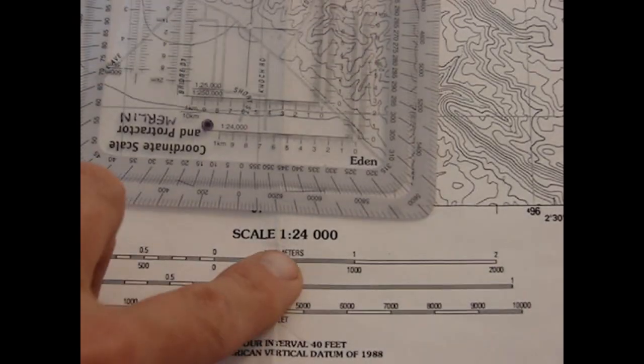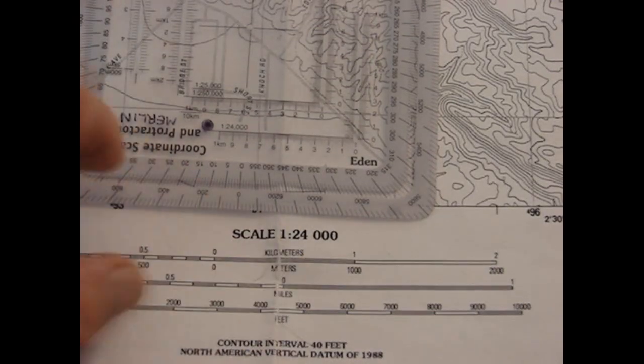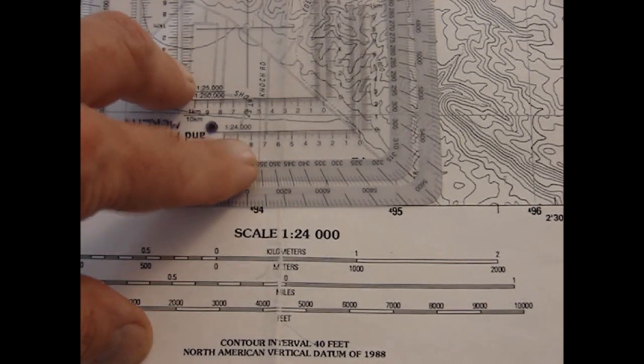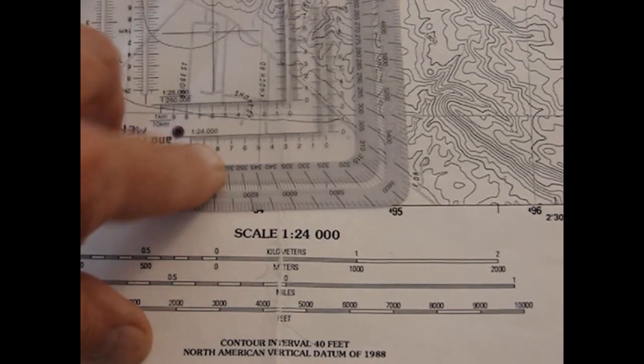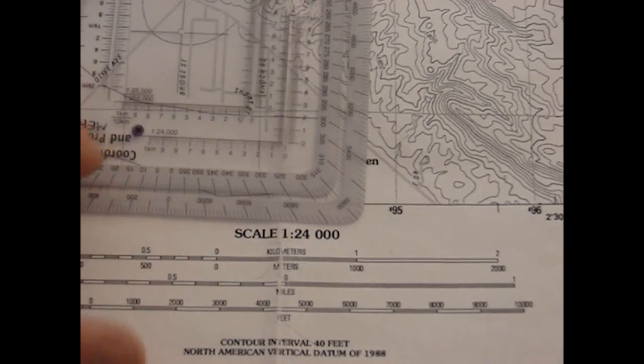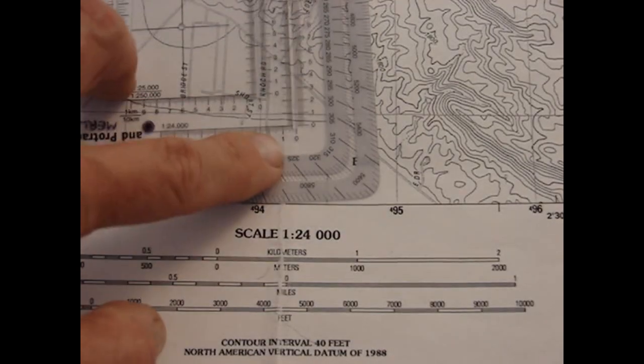Alright, when you get your map, you see that it's 1:24,000 scale. You want to make sure that you use your protractor on the same scale, that sliding scale. You always want to read your coordinates to the right and then up.